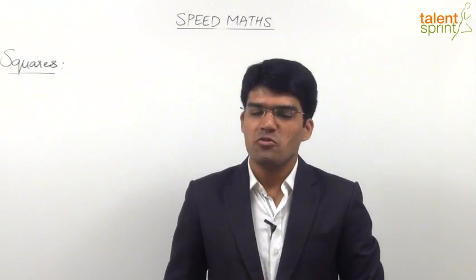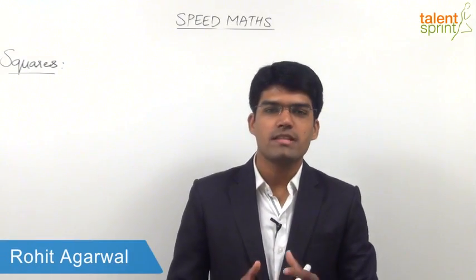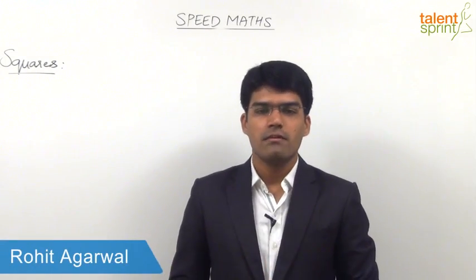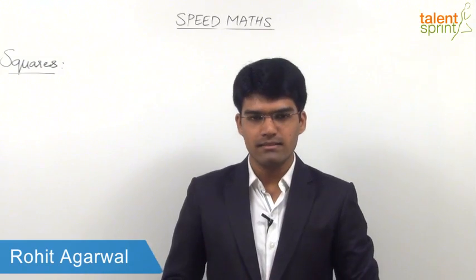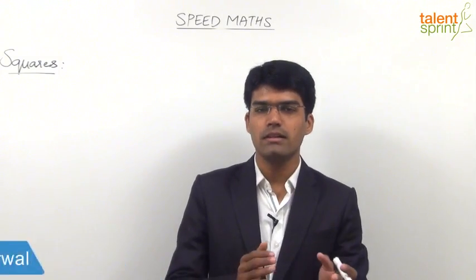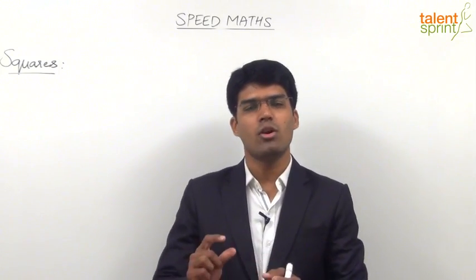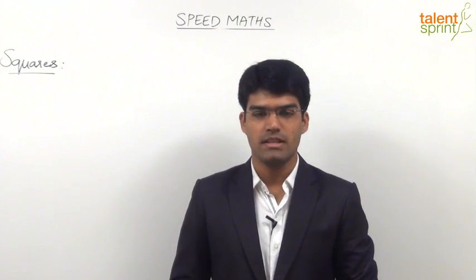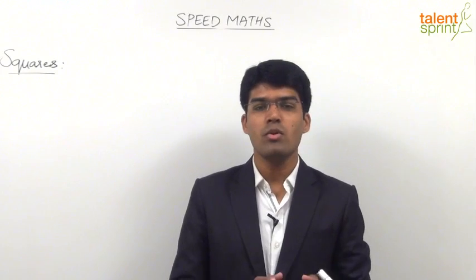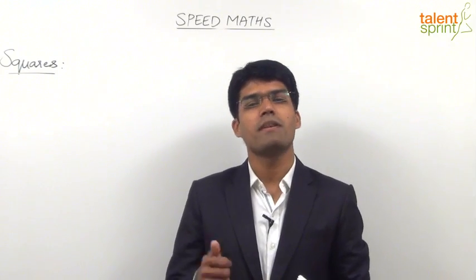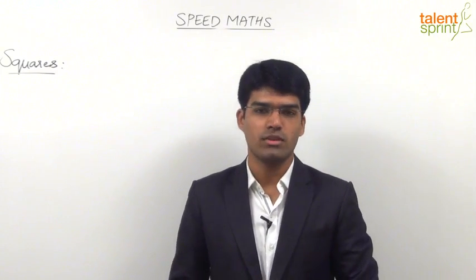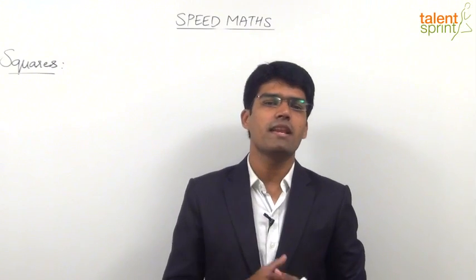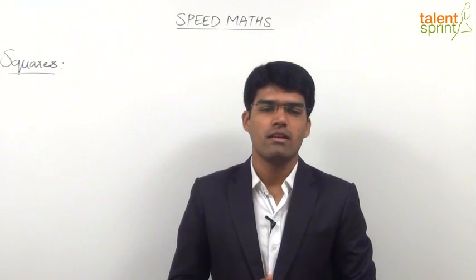Let us now understand how to find out squares for numbers beyond 80. We have already learned that for 30 to 80, the base should always be taken as 50. So how do we get the square of a number which is more than 80? For example, let us find out 84 squared.